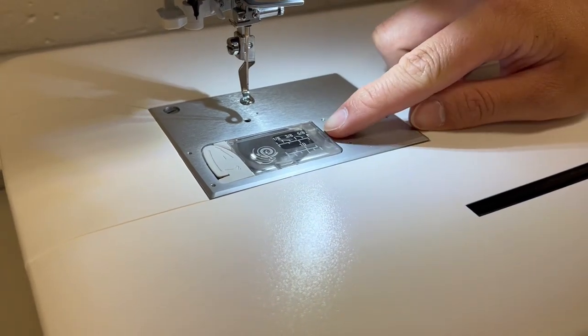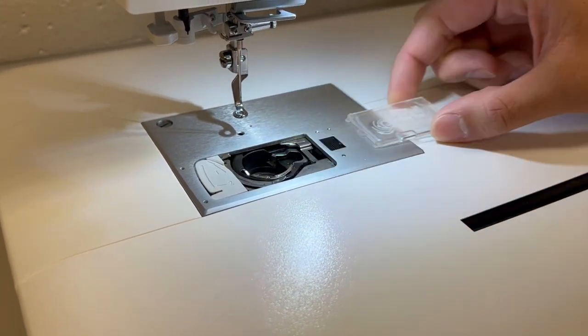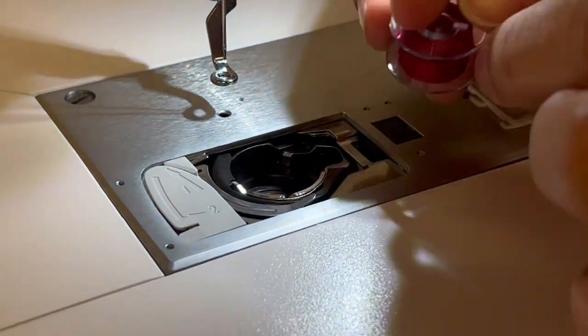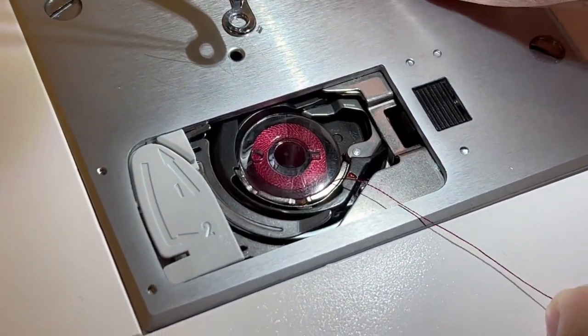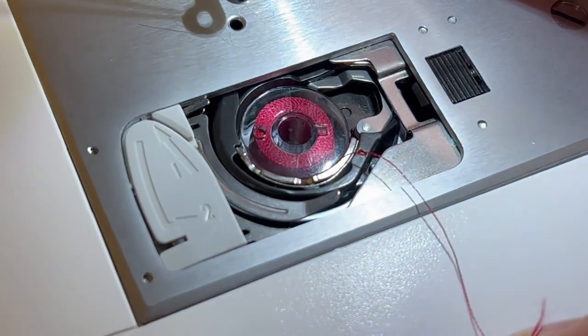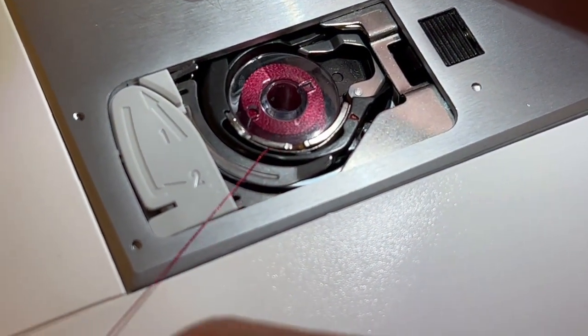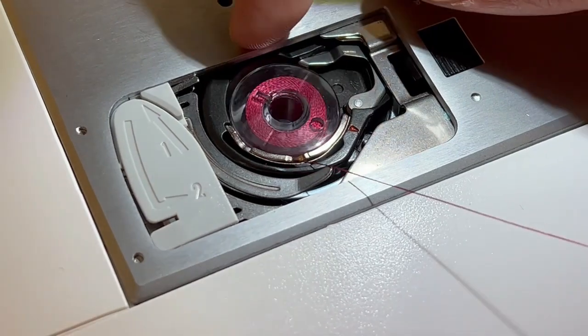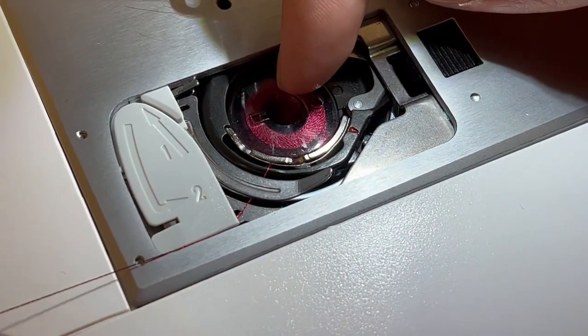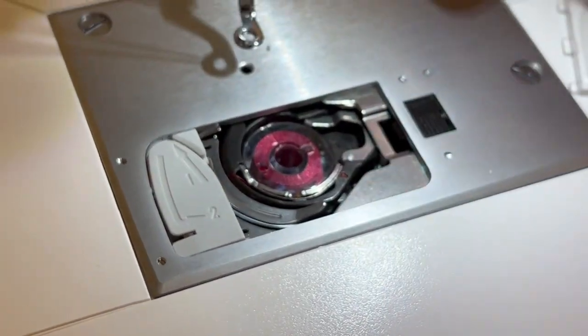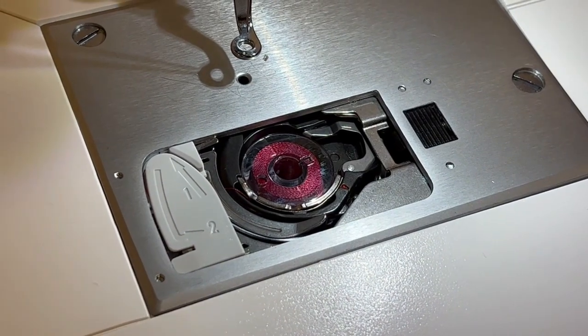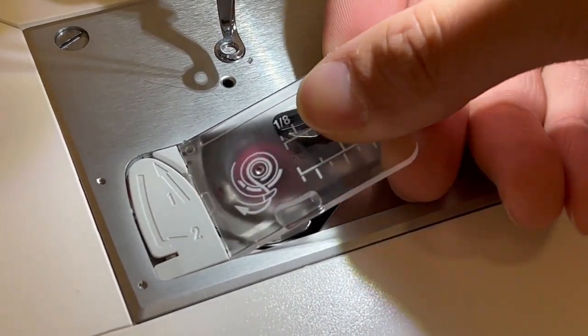Open the hook cover plate and follow the steps shown. Make sure it goes through the guide correctly. Cut the thread. Place the cover back on.